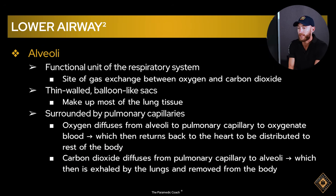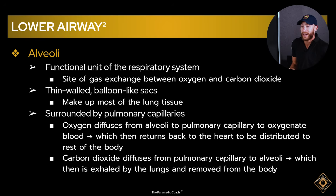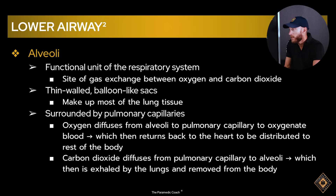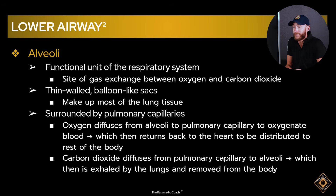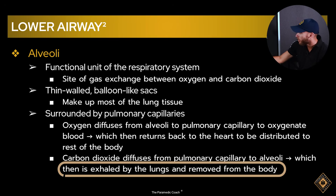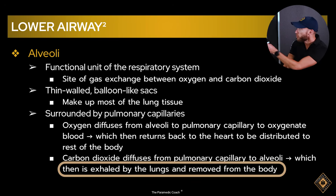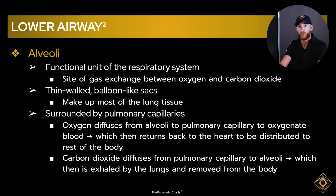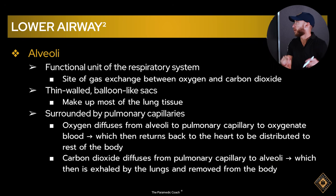Oxygen comes into the body — we need that for our blood. Carbon dioxide is a waste product; get it out of the body. So we take it from the pulmonary capillaries to the alveoli, and then when we exhale, it leaves the body. That is the movement of oxygen and carbon dioxide.